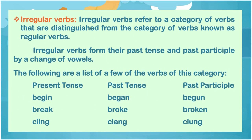Irregular verbs — they refer to a category of verbs that form their past tense and past participle by a change of vowels. The following are a list of a few verbs of this category. You can see the present tense, past tense, and past participle forms. For example: begin, began, begun; break, broke, broken; cling, clang, clung.